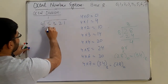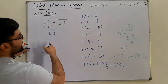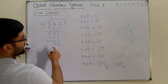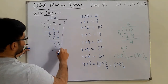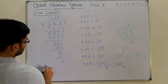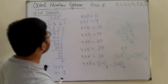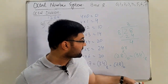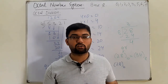Continuing 5321 divided by 4: 4 × 1 = 4, bringing down digits step by step. 13 divided by 4: 4 × 2 = 10, remainder 3. Bring down 2: 32 divided by 4: 4 × 6 = 30, remainder 2. Bring down 1: 21 divided by 4: 4 × 4 = 20, remainder 1. The quotient is 1264 with remainder 1. That concludes octal division and all basic operations in the octal number system.